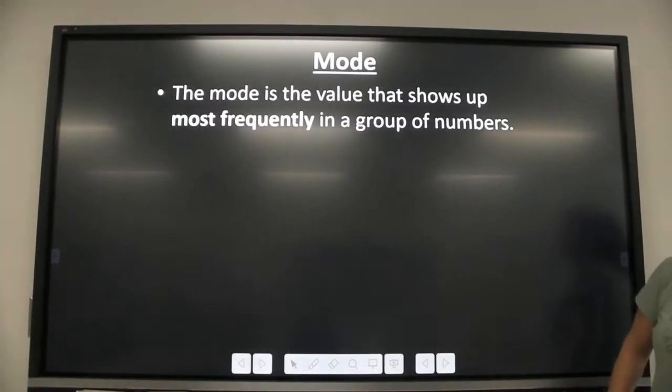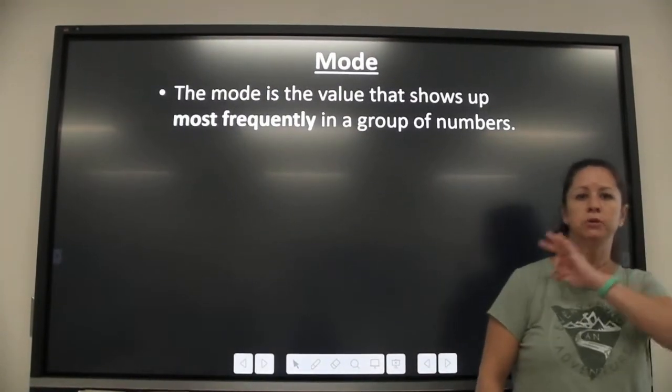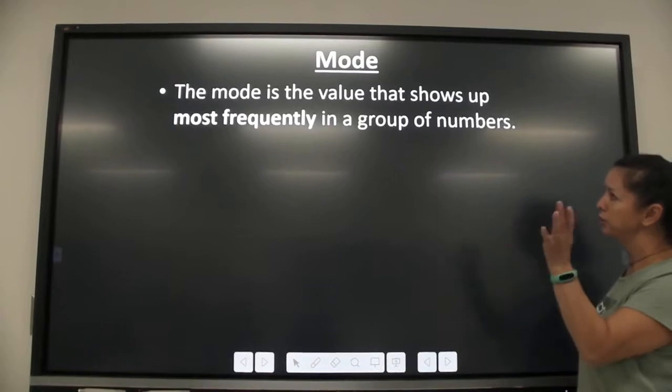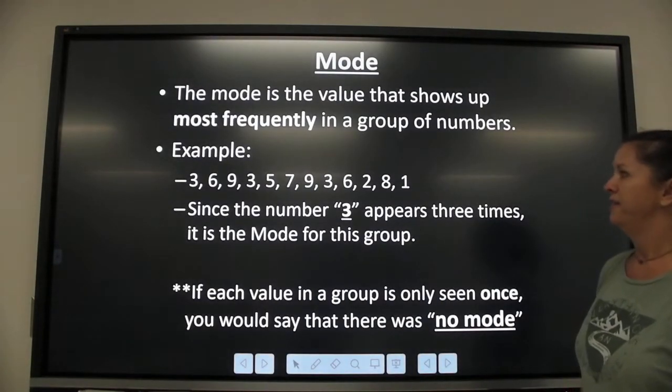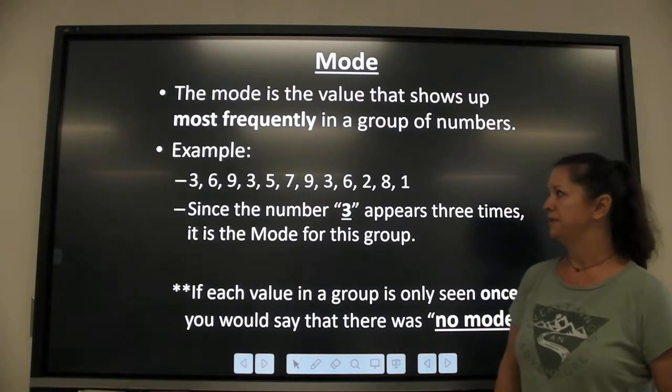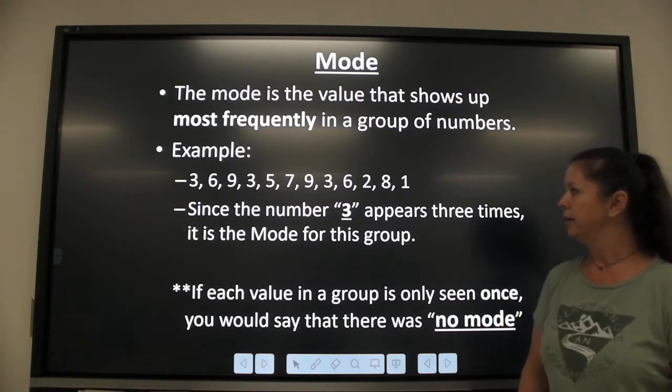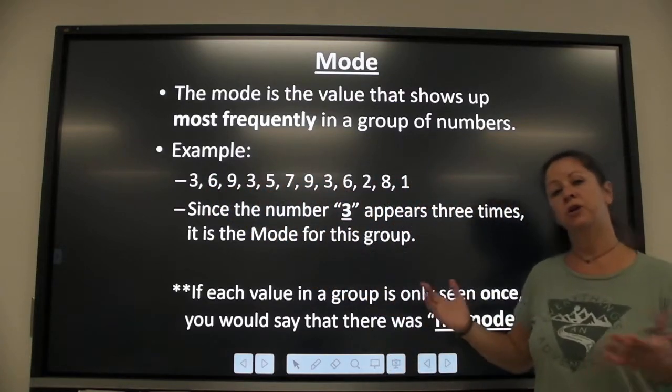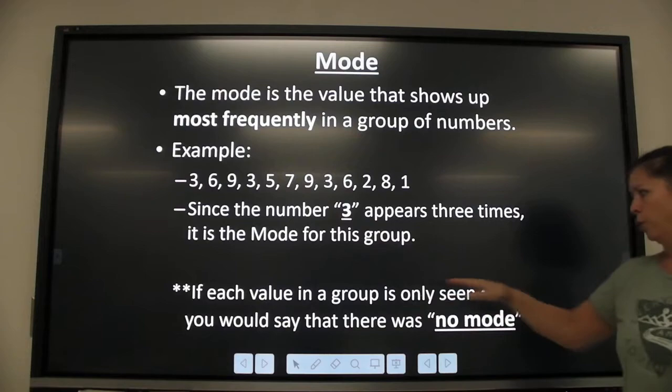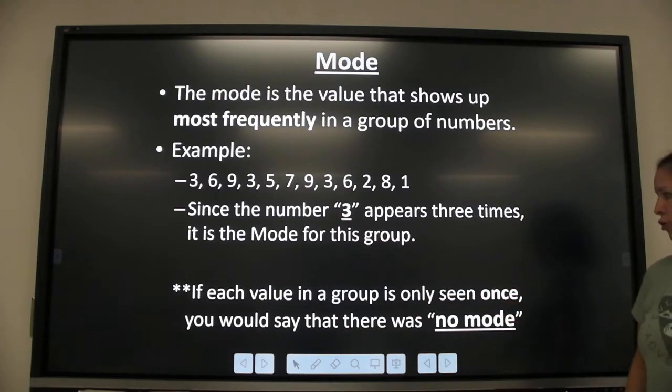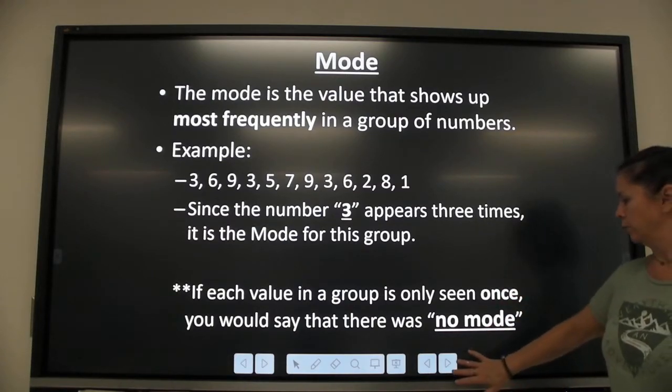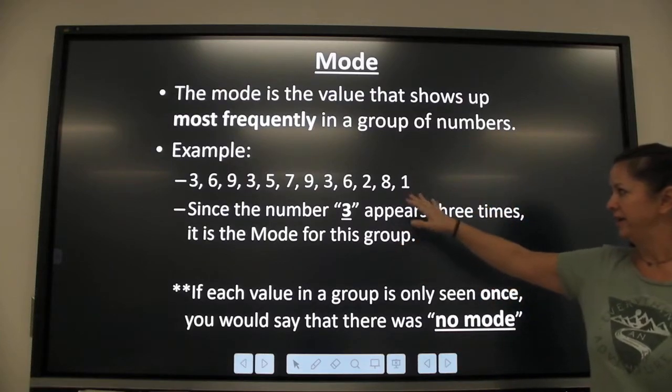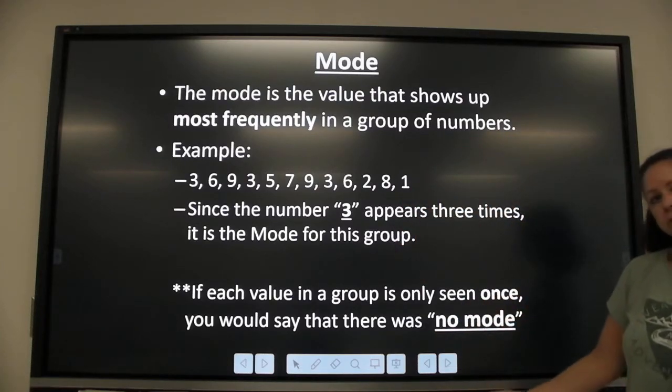The mode is the one that shows up most frequently. Which number shows up the most? So for example, if I have 3, 6, 9, 3, 5, 7, 9, 3, 6, 2, 8, 1, 3 appears three different times. And so 3 is going to be my mode. Now, if each value in a group is only seen once, so they're all the same number of times, you would actually say no mode. So the one that shows up the most often is your mode, or there's no mode.